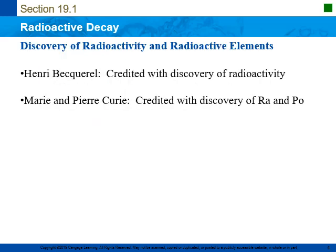Radioactive materials were first discovered back in the late 1800s by a gentleman named Henry Becquerel. He found that uranium ores, which they called pitch blend, were able to expose photographic film in a dark room, so he knew that some type of hidden radiation must be given off in order to expose the film. Marie and Pierre Curie were credited with discovering the elements radium and polonium, both of which are radioactive materials. They won Nobel prizes for their work and later died from all the exposure to the radioactive material.